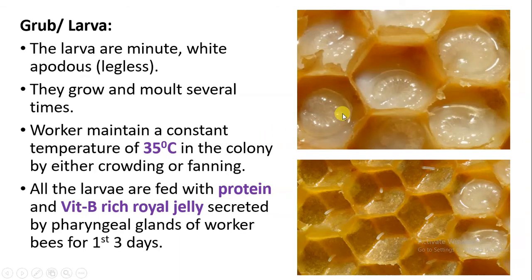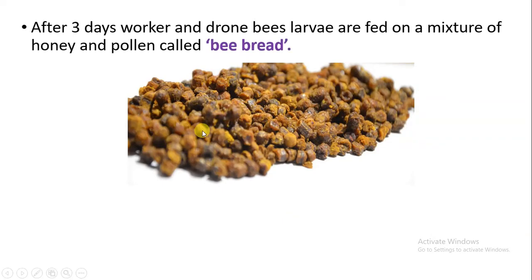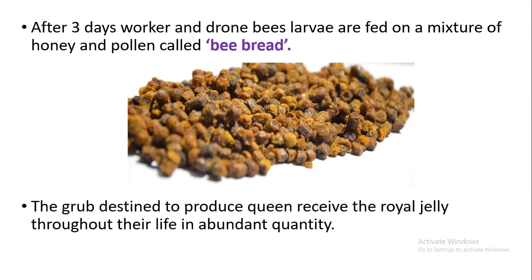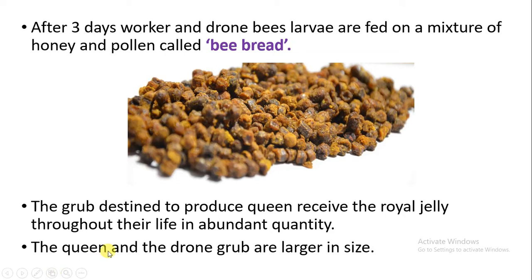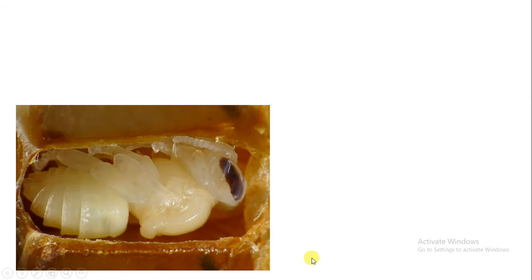In the first three days of the larval stage, all larvae — drone, worker, and queen — are provided with royal jelly. After three days, those destined to become queens continue to receive royal jelly as food throughout their development. Those that will become drones or workers are later given bee bread instead. Bee bread is a mixture of honey and pollen grain. So royal jelly is given exclusively and throughout their lifetime in abundant quantity only to the queen.